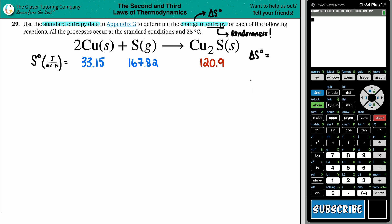And we can kind of guesstimate what it's going to be, whether it's positive or negative, by just looking at the states. In this case, we started off with a solid and a gas, and we just went to a solid. Keep in mind that solids are very structured.